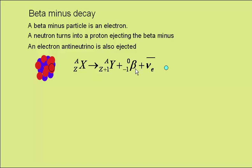This is the beta particle, and this is the electron anti-neutrino. You see that the equation balances as Z equals Z plus 1 minus 1, and A equals A plus 0.